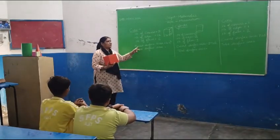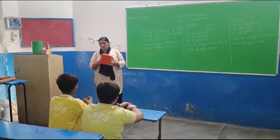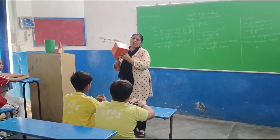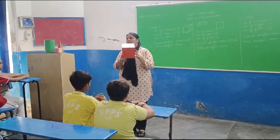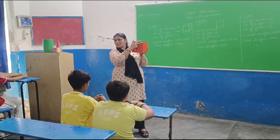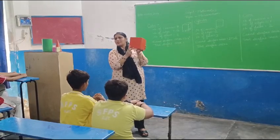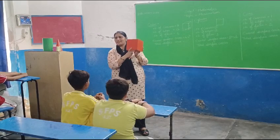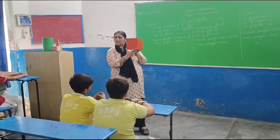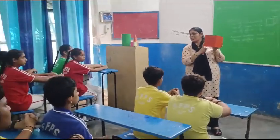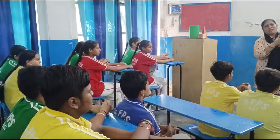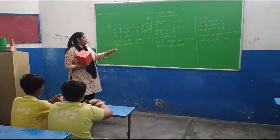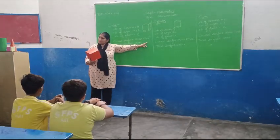Now we are going to find the curved surface area and the total surface area of the cube. What is curved surface area? Curved surface area is the area which covers the boundary of the solid. In this figure, you are looking at this — this is the shape of a square. What is the area of one square? Side squared. If the side of the square is A, then the curved surface area is 4A².